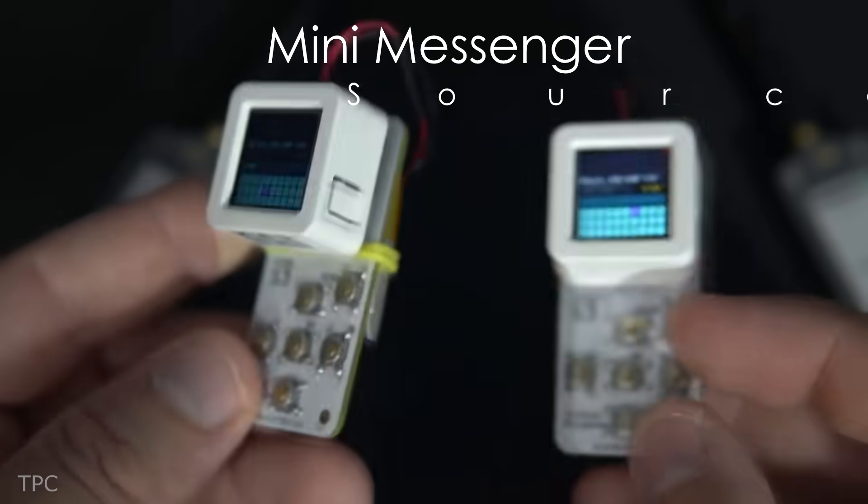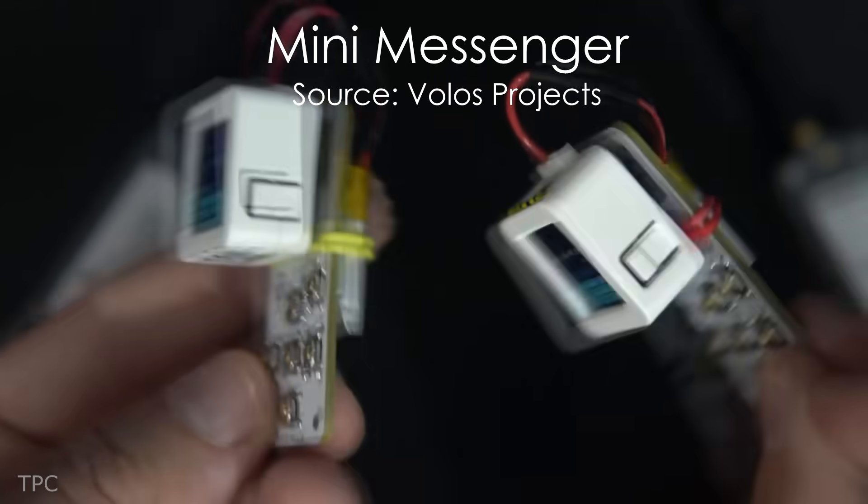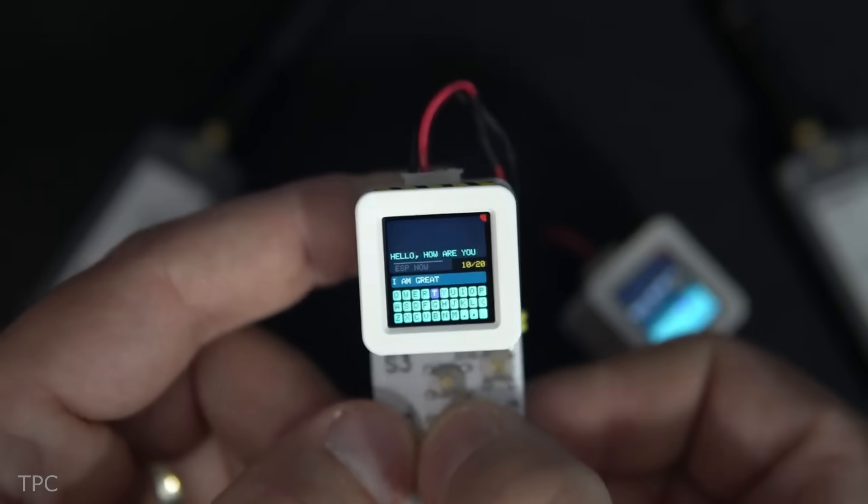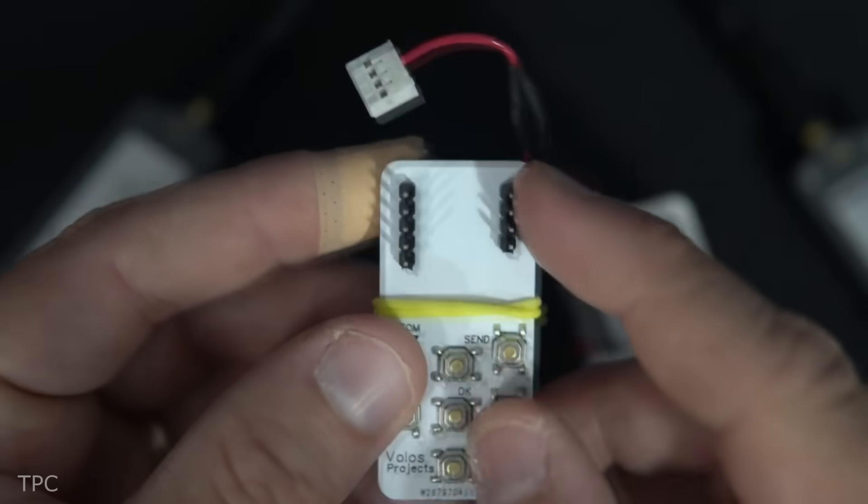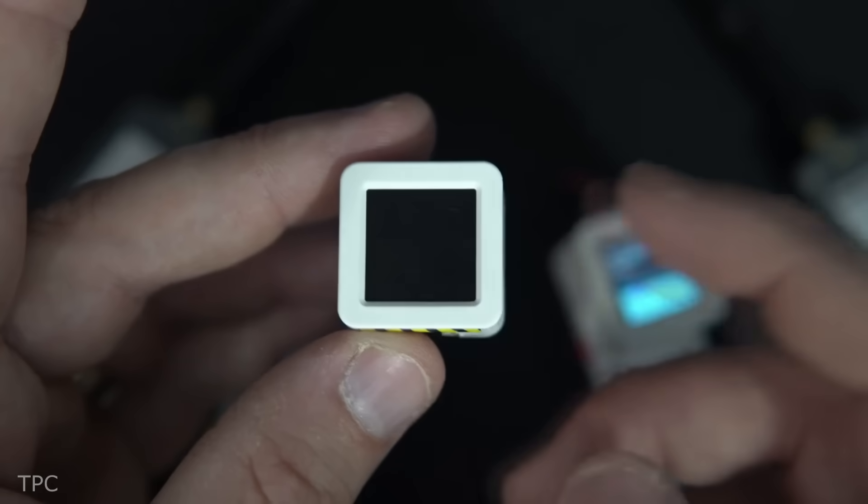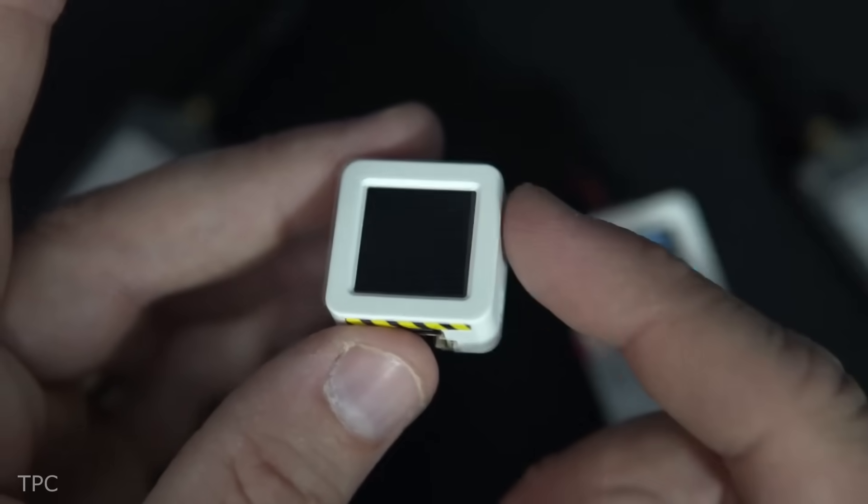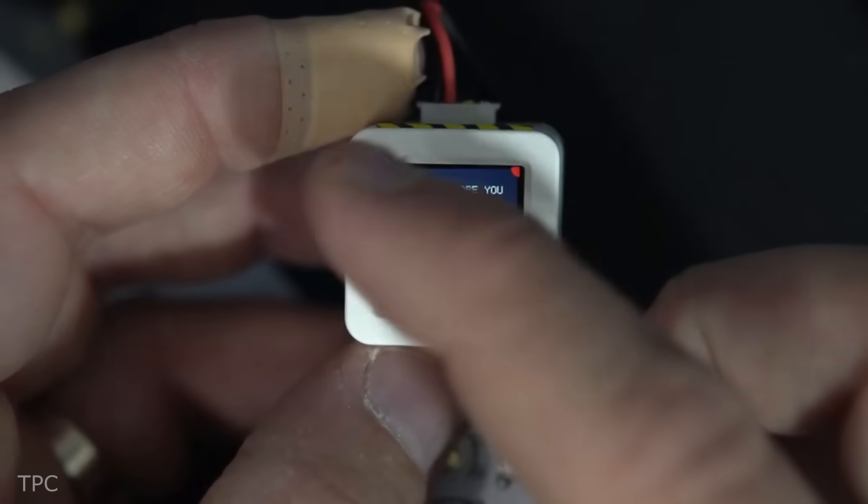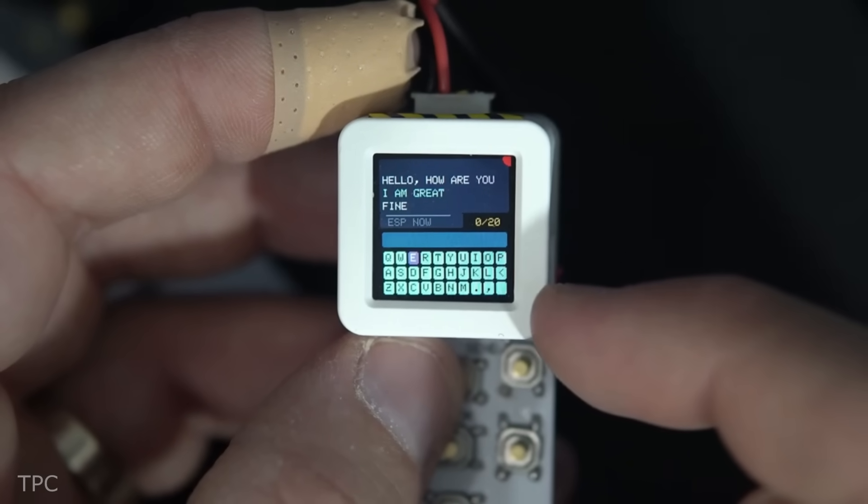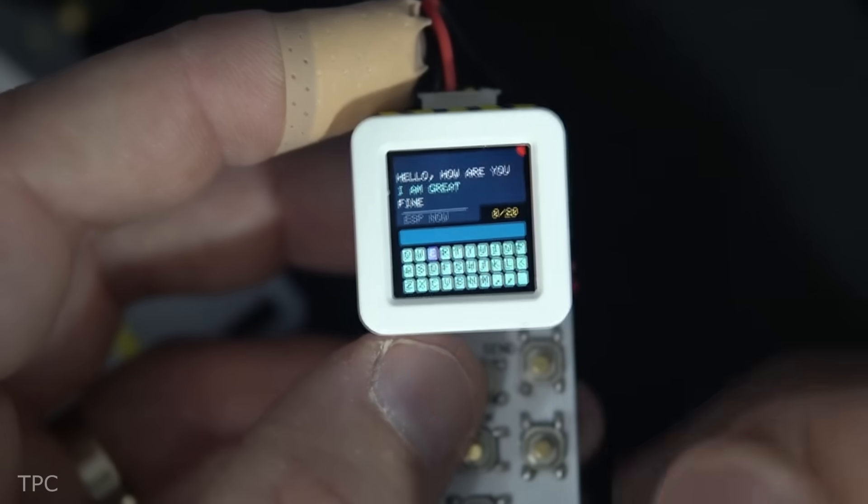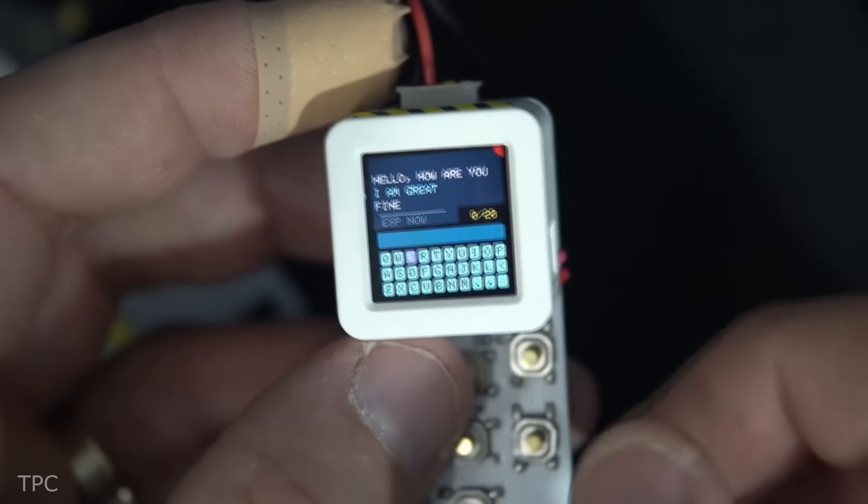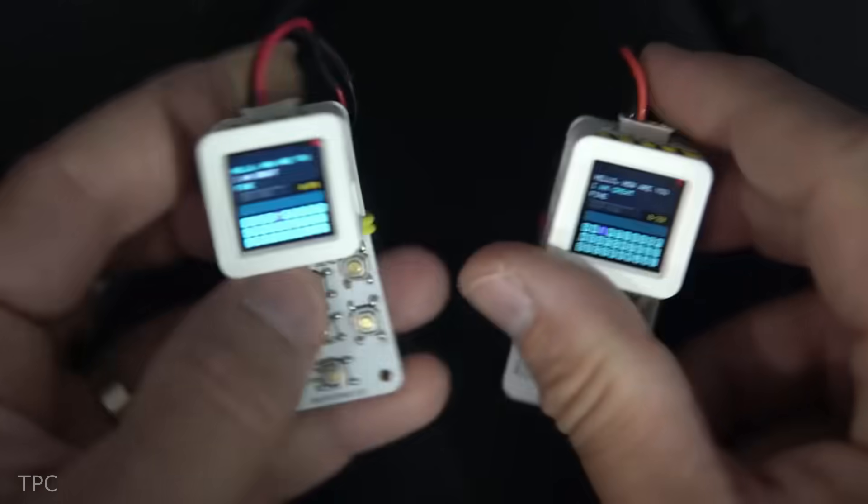Number 1. Volos created a miniature messaging device that sends short messages using two-way ESPNOW communication. Despite its simple appearance, which consists of a custom PCB, some tactile switches, and an M5-Stack Atom S3 development board, it works effectively. It's important to note that the device is only suitable for short-range communication, and each message can be up to 20 characters long. However, it's a great way to communicate with your friends.